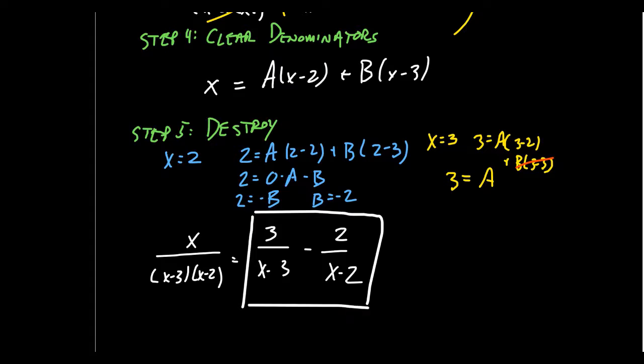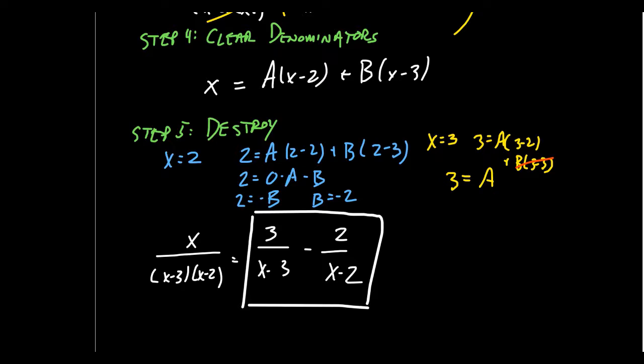We found the partial fractions that add together to give us the original fraction. You can check — I'll leave it to the viewer — that 3 over (x minus 3) minus 2 over (x minus 2), when you add these together, gives back the original fraction x over (x minus 3)(x minus 2).